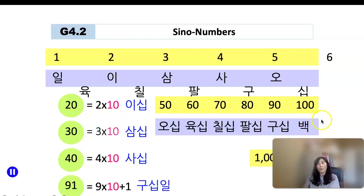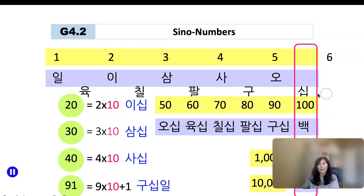How about 1,000? 1,000 is 천. I want you to memorize the unit names: 십 for 10, 백 for 100, 천 for 1,000, and 만 for 10,000.